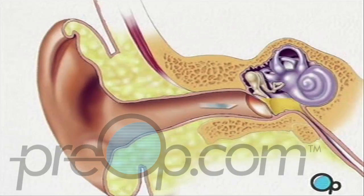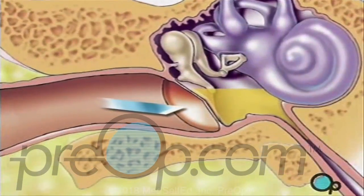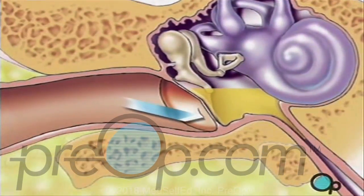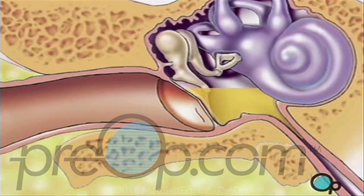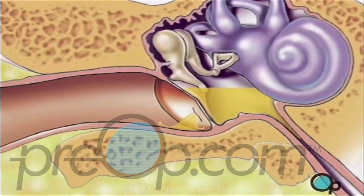When the operative field is numb, the surgeon will use the microscope to help make a very small incision in the lower part of the eardrum so that the fluid can drain harmlessly away.